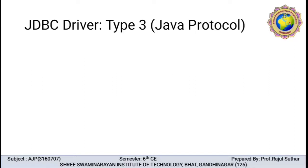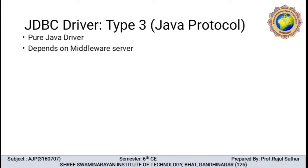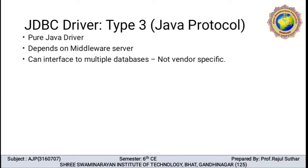In this type 3 driver, we will discuss with a figure. Here is some description related to type 3. It is a pure Java driver, dependent on a middleware server — we require one middleware server or component server. It can interface to multiple databases and is not vendor specific. Previous drivers like type 2 are vendor specific, and type 1 covers the JDBC-ODBC bridge. So type 3 driver does not cover any vendor.